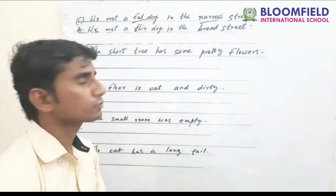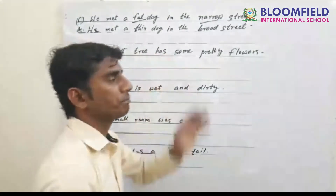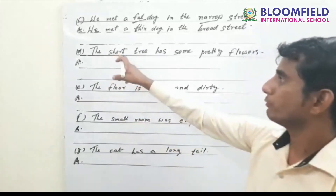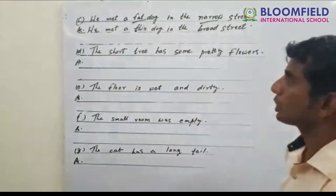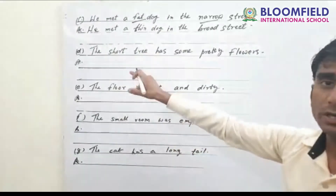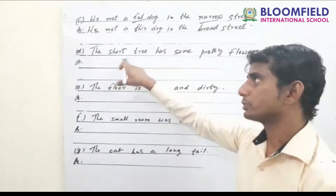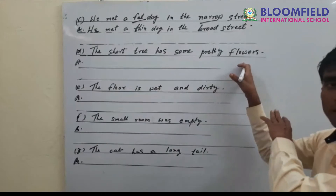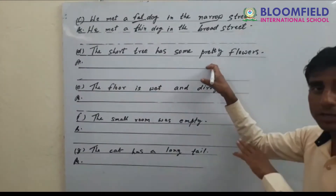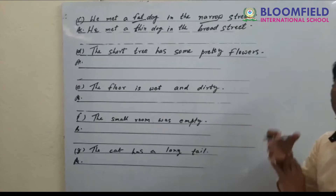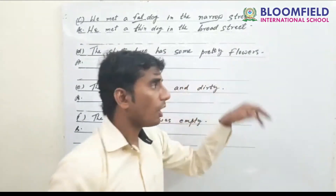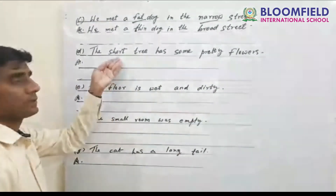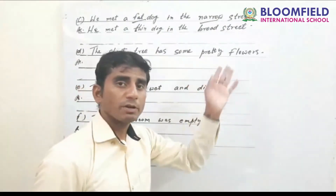Next: 'The short tree has some pretty flowers.' Find the adjectives — 'short' is qualifying the tree, and 'pretty' is qualifying the flowers. The opposite of short is tall, and the opposite of pretty is ugly. So the answer is: the tall tree has some ugly flowers.